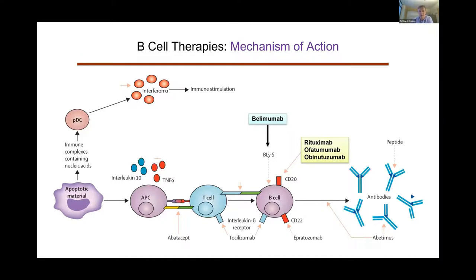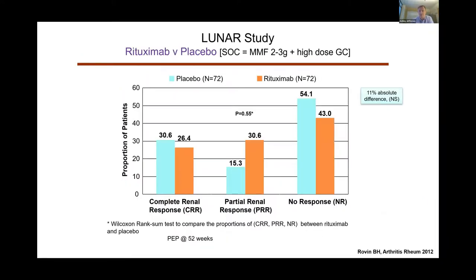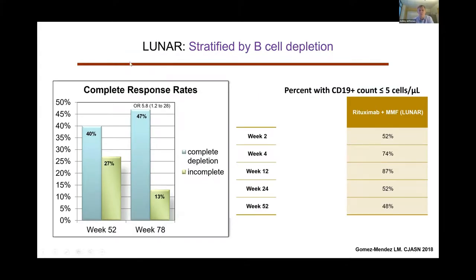Moving quickly to B-cell therapies. The Lunar study of rituximab showed a non-significant result — there was an 11% absolute difference, but numbers were relatively small — though rituximab has been used widely as rescue therapy in lupus with good results in cohort studies. A reanalysis published in 2018 looked at subjects who achieved complete B-cell depletion versus those who did not. At the 78-week time point, there was a significant difference in complete response rates between those who depleted versus those who didn't.